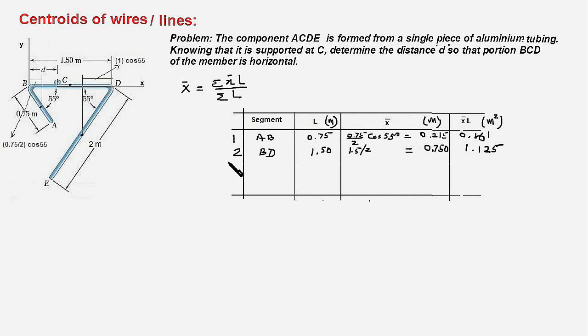The third segment is DE. Its length is 2 meters, and the center point is here. Therefore, the X bar of this centroid would be the distance from point B to this point, which would be 1.5 minus 1 times cosine of 55 degrees. This length is 1, and therefore this length would be 1 times cosine of 55 degrees.